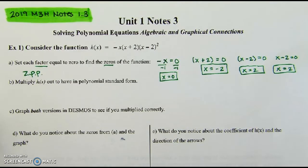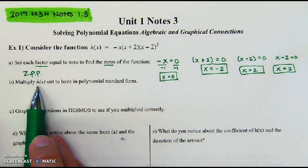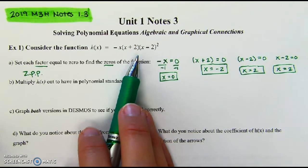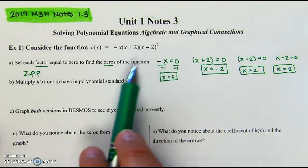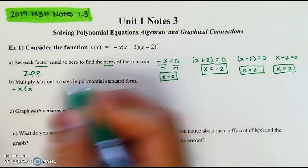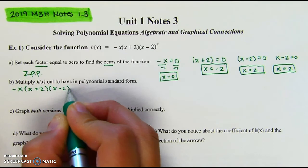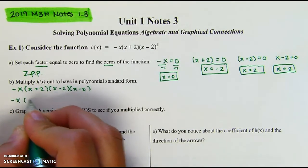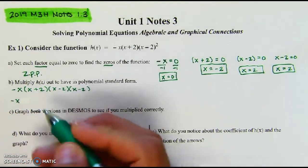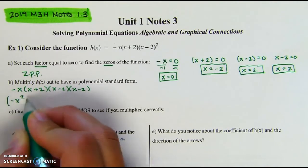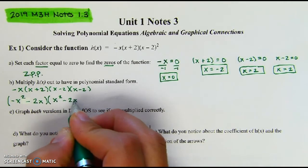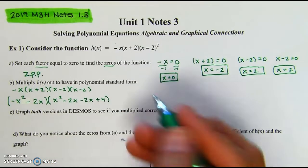Now multiply h(x) out to put it in polynomial standard form — that's what we did in Notes 1. First, remember: don't distribute yet, foil the repeated factor first. x − 2 times x − 2 is NOT x² − 4. Then distribute negative x into the first group: negative x times x is negative x², and negative x times 2 is minus 2x.